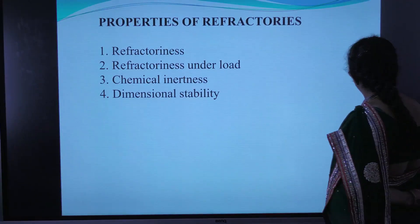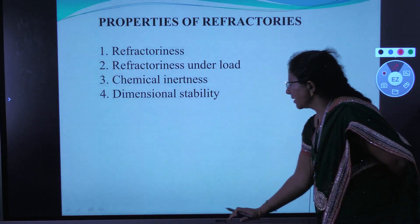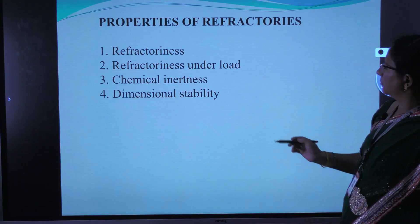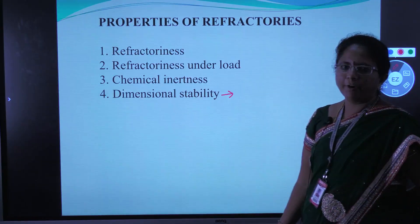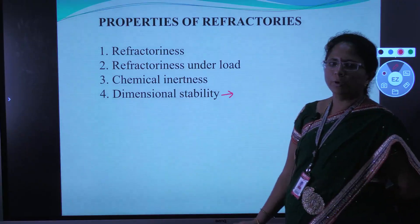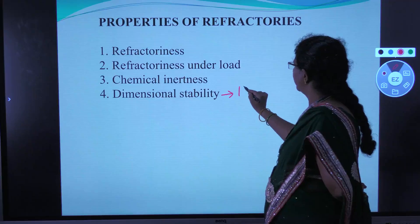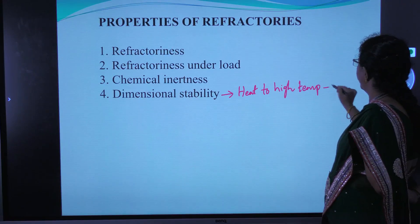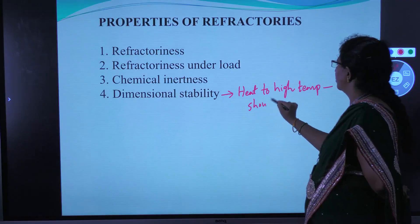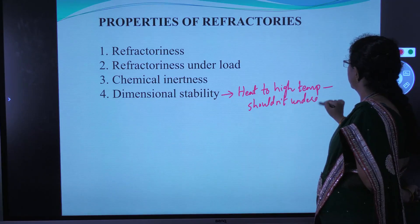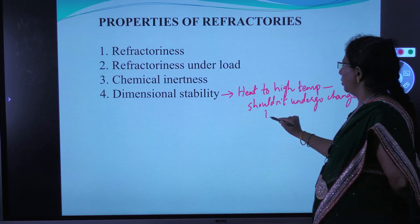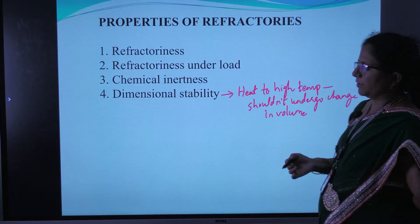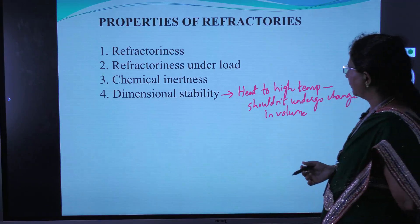The next property is dimensional stability. Dimensional stability is the property which describes the resistance towards change in volume. A refractory material should not undergo a change in volume upon heating to high temperatures. This change may be reversible or irreversible. If the change is irreversible, it may lead to expansion or contraction of the refractory material.